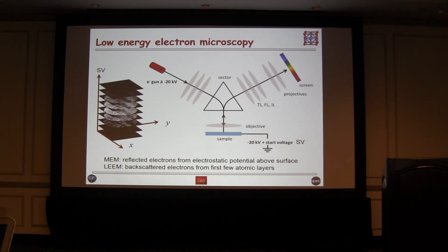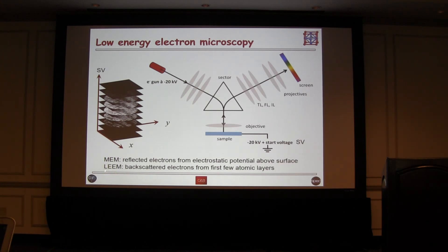There are two regimes in this sort of microscopy. MEM, which is mirror electron microscopy: electrons do not have enough energy to penetrate the sample surface — they are reflected before coming into contact with it. That is very useful, particularly as we're looking at insulating samples, so we can avoid charging. The other regime is LEEM, low energy electron microscopy, where the electrons penetrate the first few nanometers of the sample surface and are backscattered, so there's an interaction and you can actually get some chemical information.